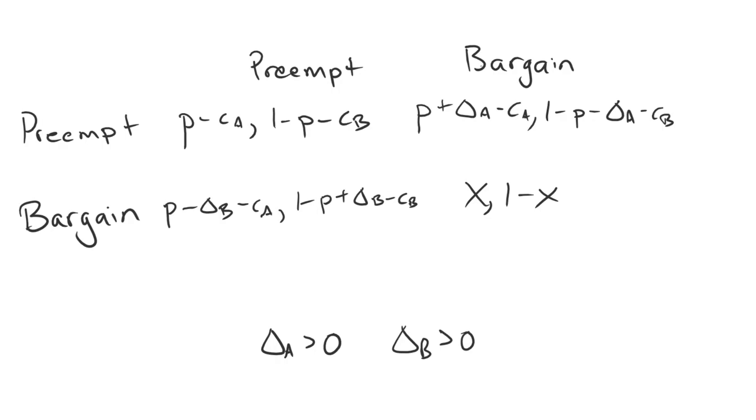Again, the question that we want to answer is whether we can sustain mutual bargaining. Is there a division X and 1 minus X such that A is perfectly happy to bargain knowing that B is planning to bargain? And likewise, B is perfectly happy to bargain knowing that A is planning on bargaining and knowing that we're going to have this division of X, 1 minus X ultimately.